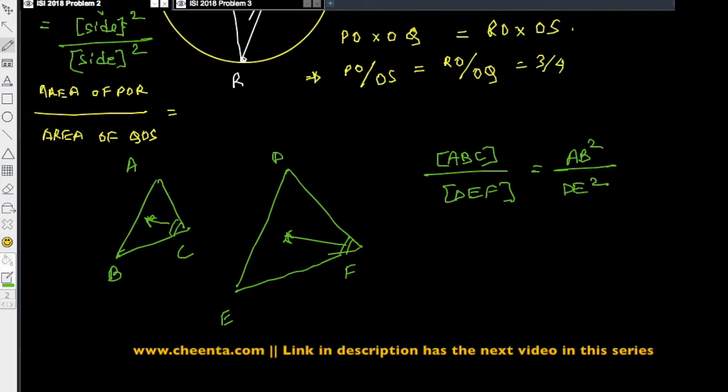And why is this true? I will just suggest a simple proof of this fact. Just drop a perpendicular. Drop a perpendicular like this. And try to show that the usual area formula for triangle ABC and DEF will give rise to this particular formula. It is quite easy. It is a standard theorem for geometry.